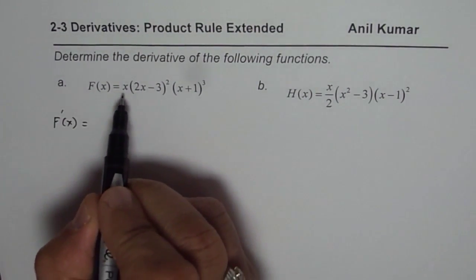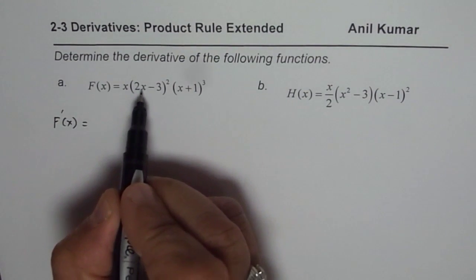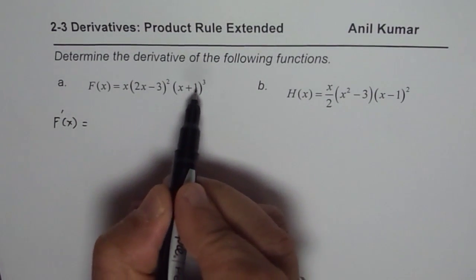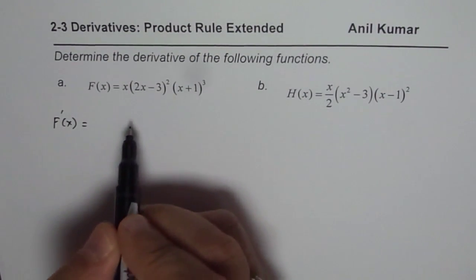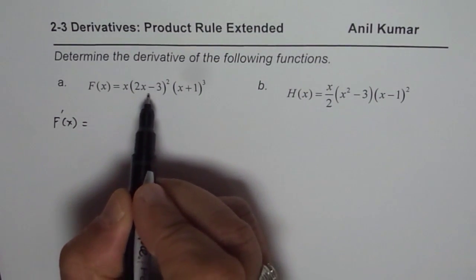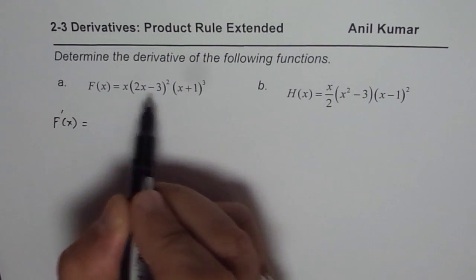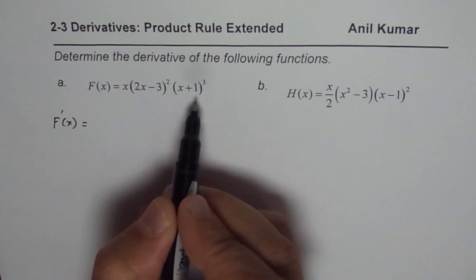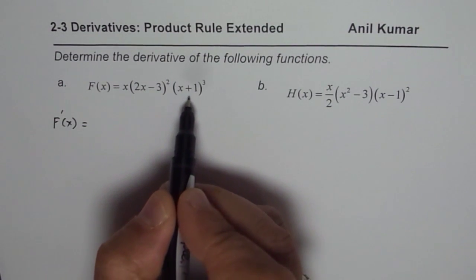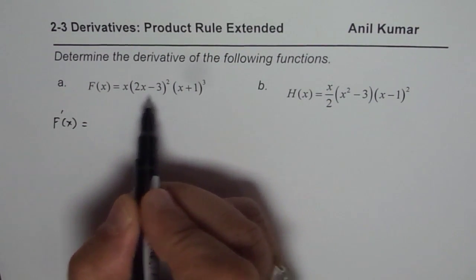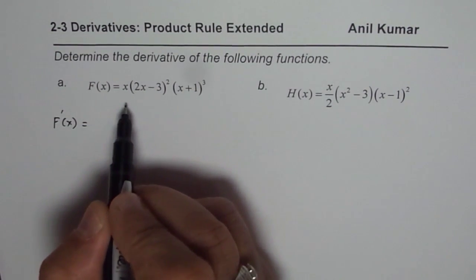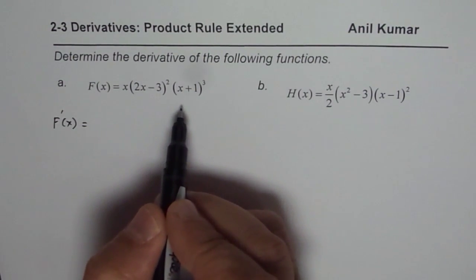It is the derivative of the first times all others, plus the derivative of the second times the rest of them, plus the derivative of the third times the previous two. So that is how it works.